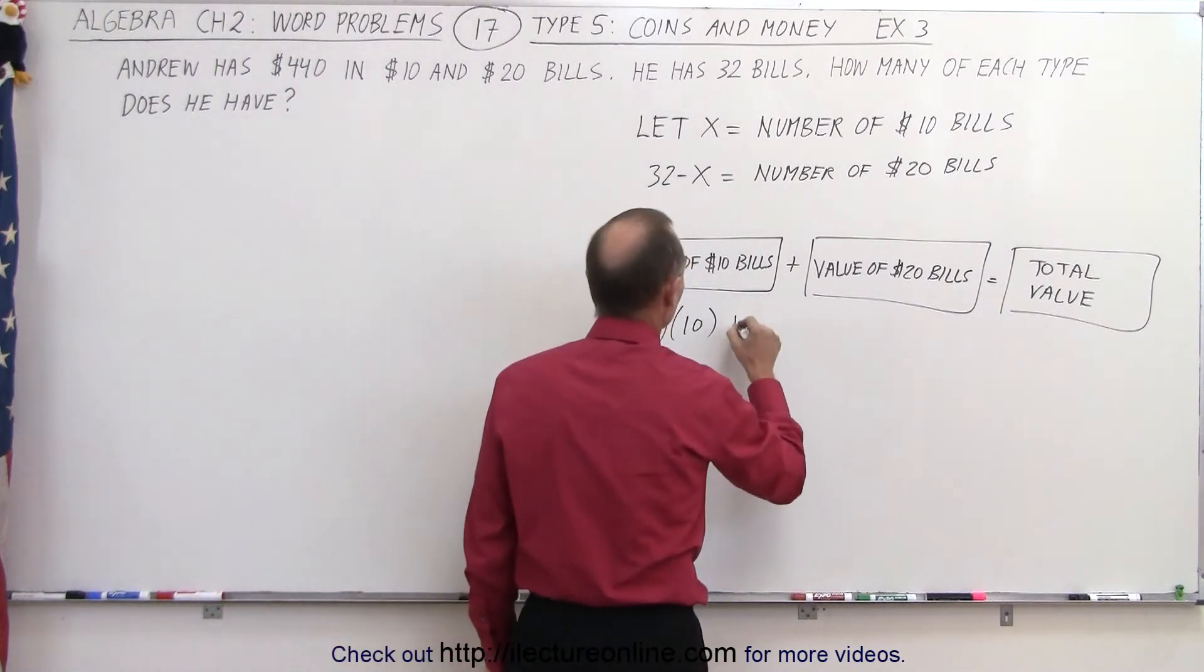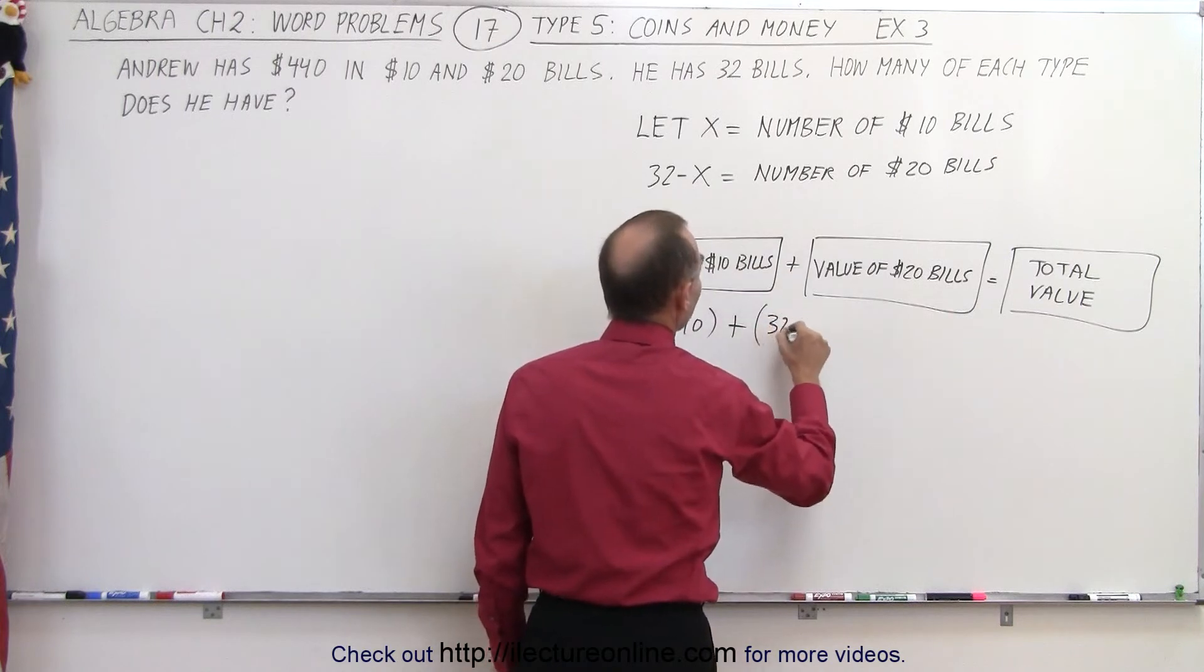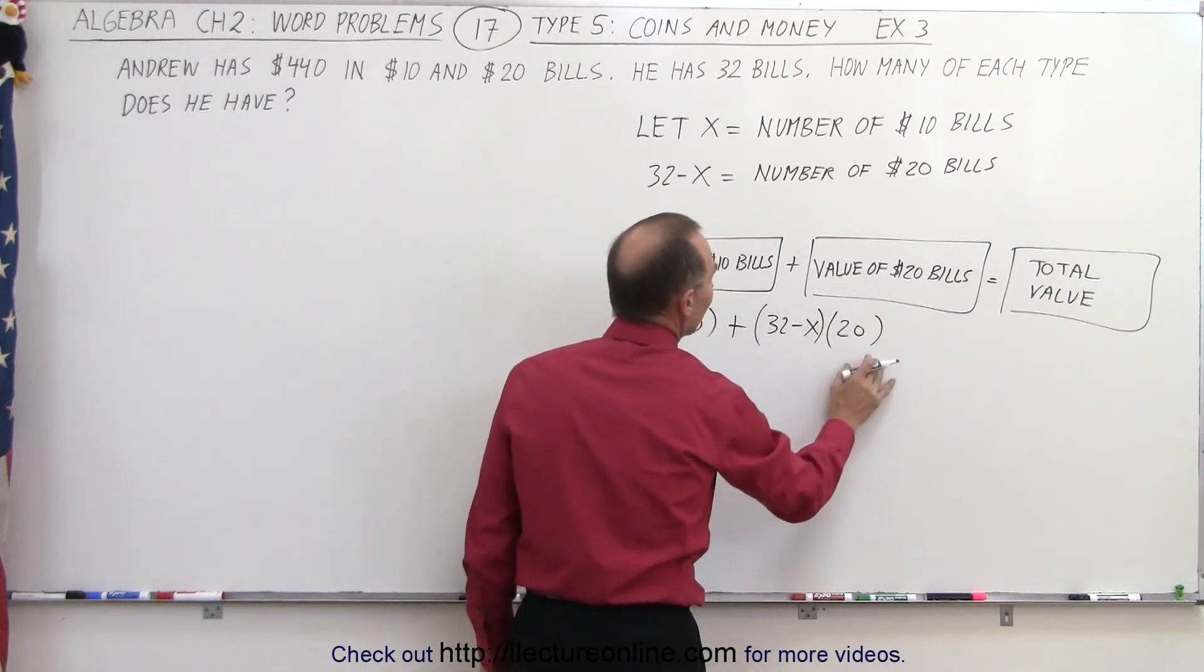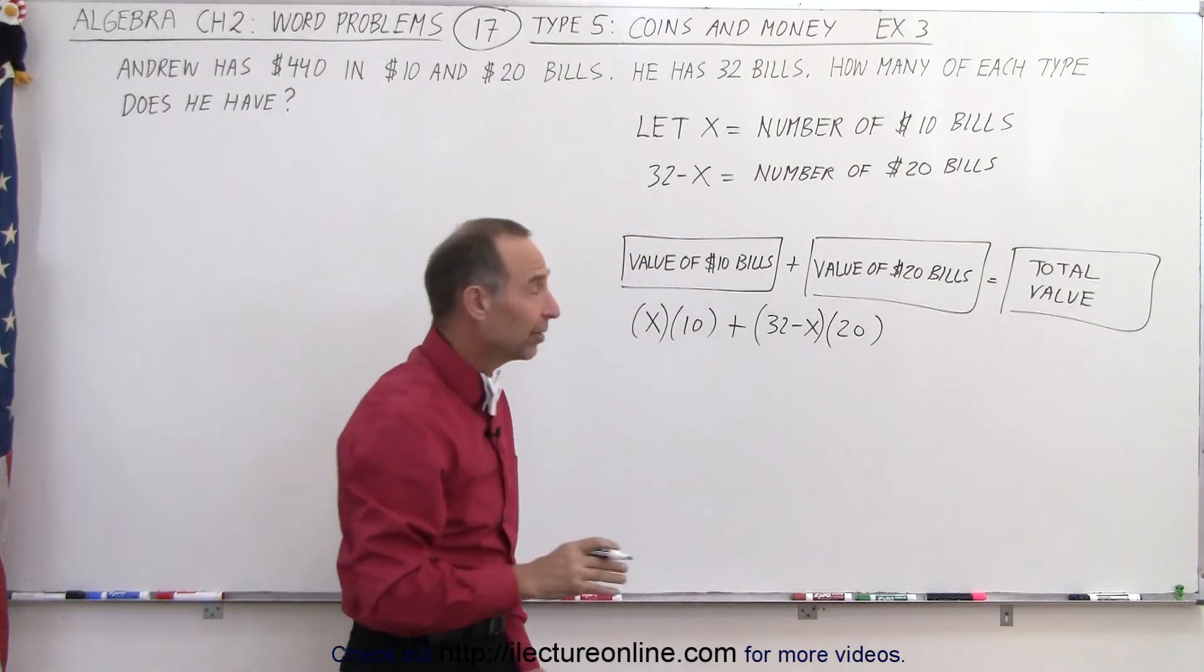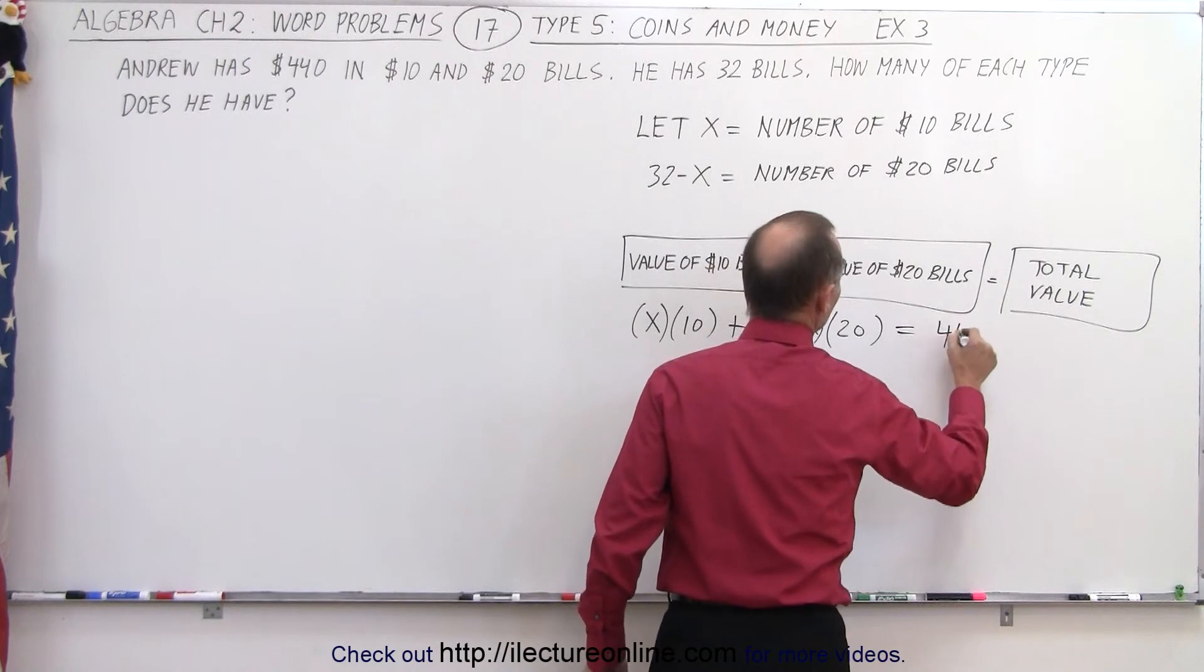We do the same for the $20 bills. So we take 32 minus x times the value of each bill. This will give us the value of all the $20 bills. And together, they should add up to the total value of $440.